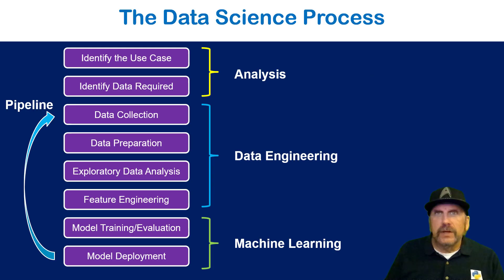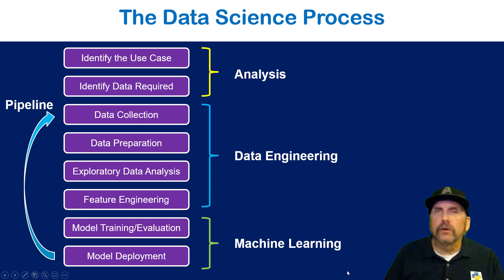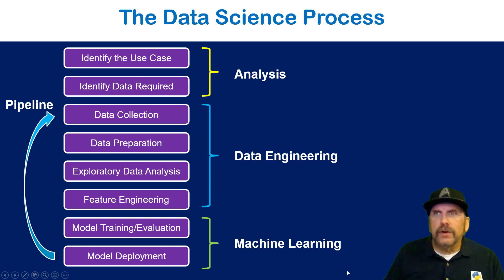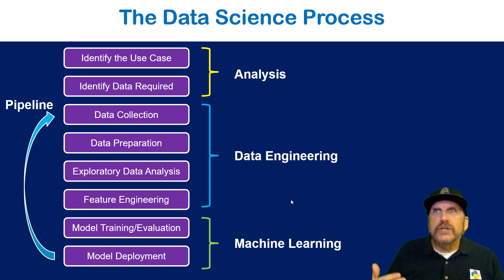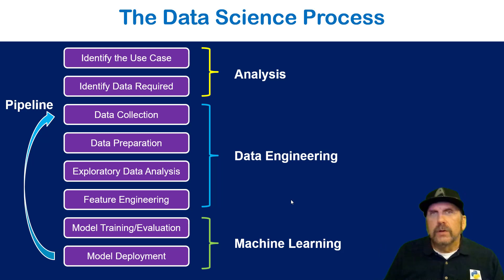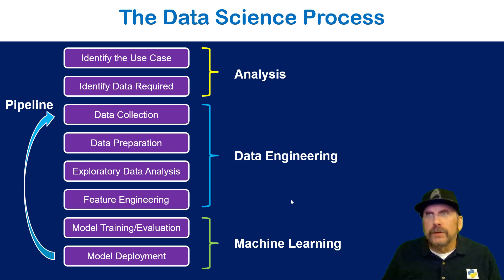Looking at the data science process, we can see that we have an analysis stage, data engineering, and machine learning. We don't have to have all of these for all work. If you've used something like Power BI or Tableau, very often you're going to kind of stop at the exploratory data analysis stage — visuals, give insight, et cetera. But we start at the very top, the analysis stage: identify the use case. I've given you that, and that's typically when management decides what they want to do. And then you have to ask a lot of questions to get your scope and understand where the data is.